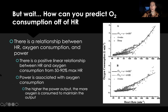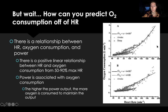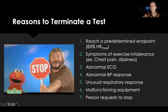How can you predict VO2 max based on heart rate? Research has established a positive linear relationship between heart rate, oxygen consumption, and power — from about 50% to max heart rate. Higher power output means more oxygen is consumed to maintain that output, and this relationship forms the basis for the prediction.